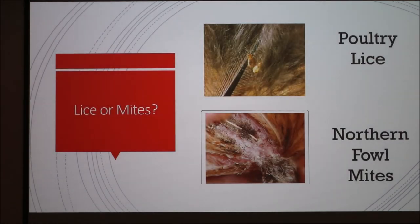The two most common external parasites in poultry are poultry lice and northern fowl mites. You can see the picture and kind of see the difference between the two.